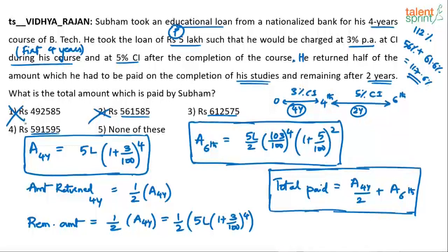If solving in the exam, I would not waste too much time in calculation — maybe just take a guess and mark the fourth option. But remember there are chances you may go wrong because the fifth option 'none of these' is there. Other techniques like unit digit method or root digit method can be applied, but those also take time. You know what needs to be done — just do the calculation yourself and find the answer.